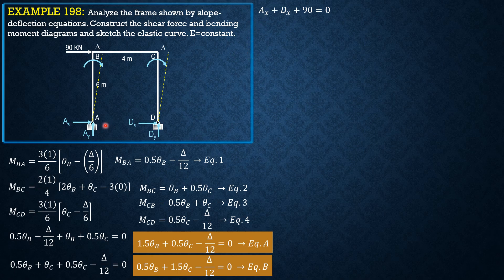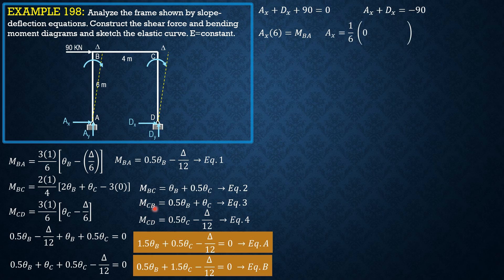We draw the free body diagram of column AB and take the sum of moments about B. Then AX times 6 equals MBA, so AX equals (1/6) MBA. Substituting MBA equals 0.5 theta_B minus delta over 12, and simplifying, AX equals theta_B over 12 minus delta over 72.